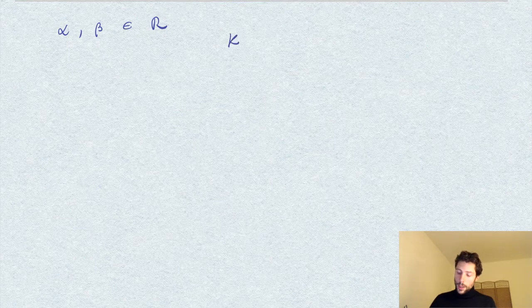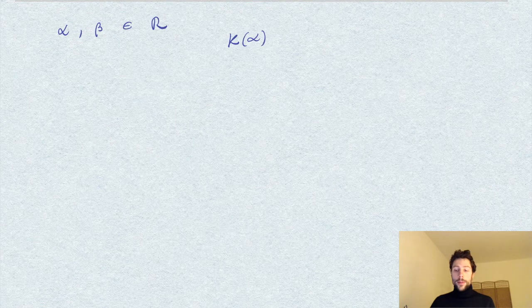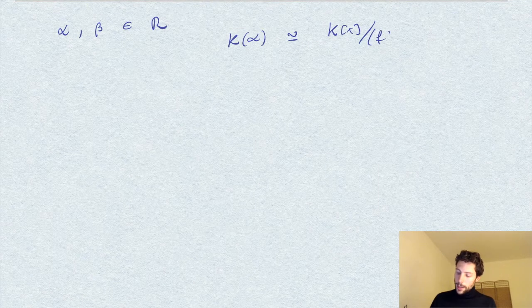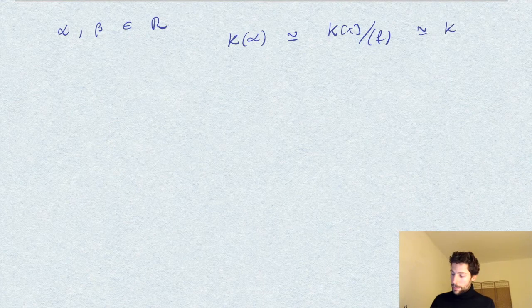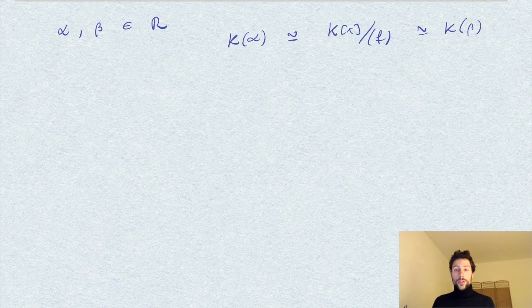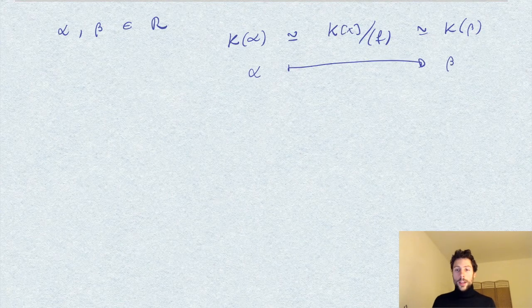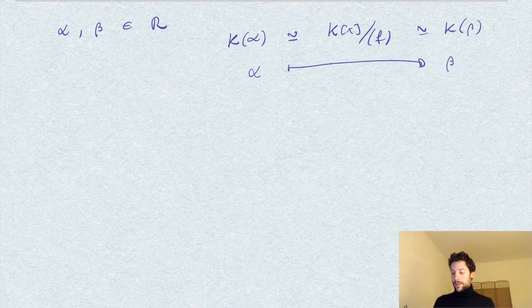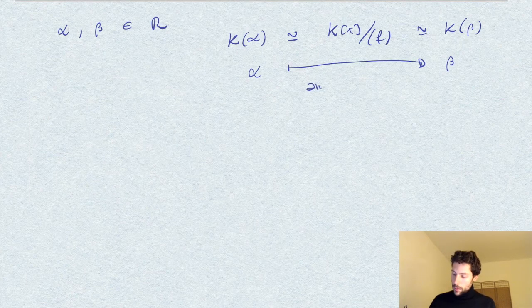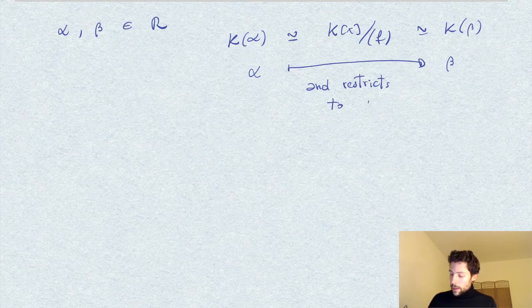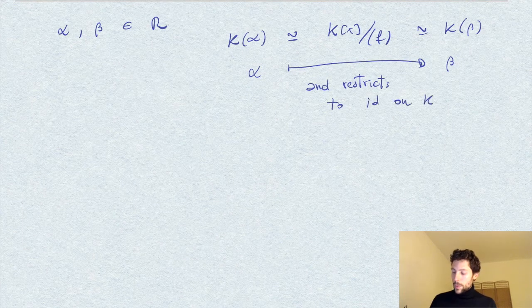The extension, the field K(α), we can write as K[x] over the ideal given by F, and the same we can do for K(β), since they are two roots of the same polynomial. With this isomorphism, we have that α is sent to β. This map sends α to β and restricts to the identity on K, on the underlying field.